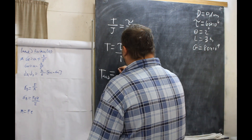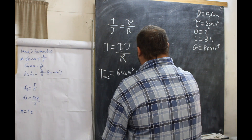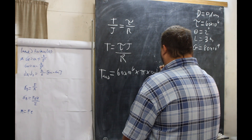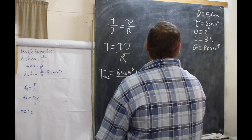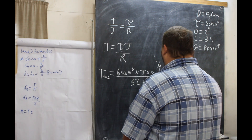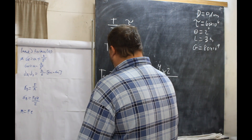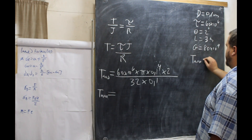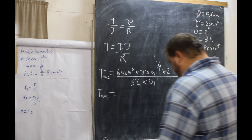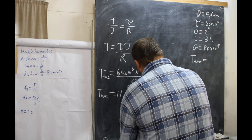So our shear stress is 60 × 10⁶, times pi times 0.1 to the power of 4, divided by 32, all over 2, times 0.1. That is the formula we follow. Our maximum torque comes out to 11,781 kilonewton meters. T max will be important for the next part.